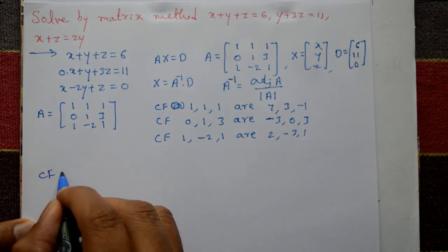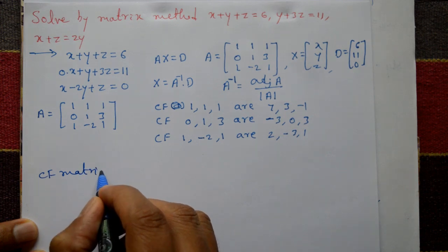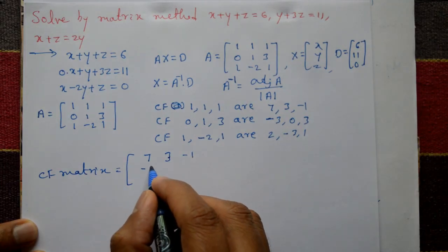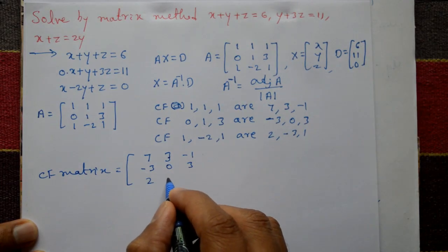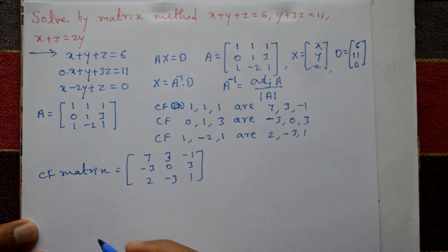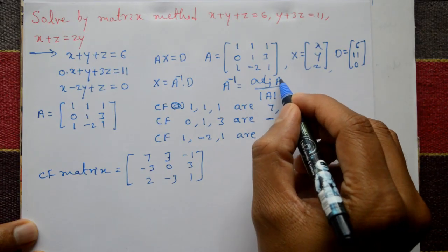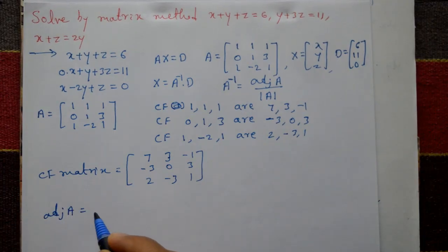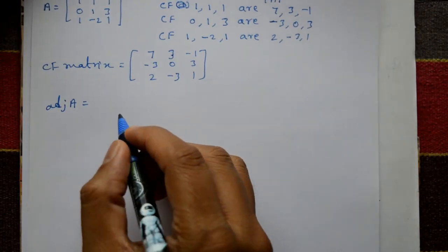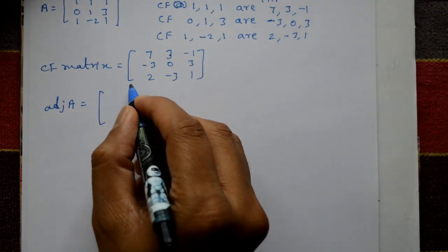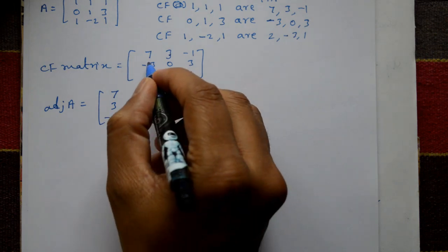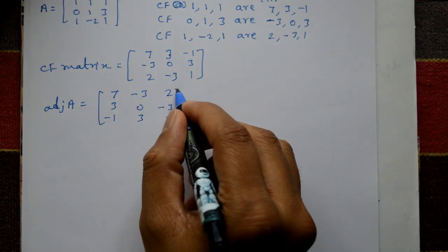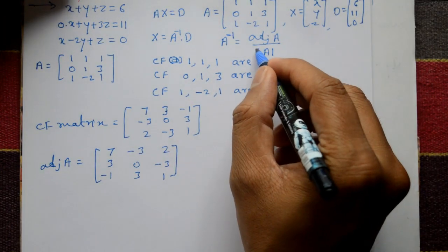The co-factor matrix is: [7, 3, -1 / -3, 0, 3 / 2, -3, 1]. To find the adjoint of A, we interchange rows into columns (transpose). So adjoint of A is equal to: [7, -3, 2 / 3, 0, -3 / -1, 3, 1].